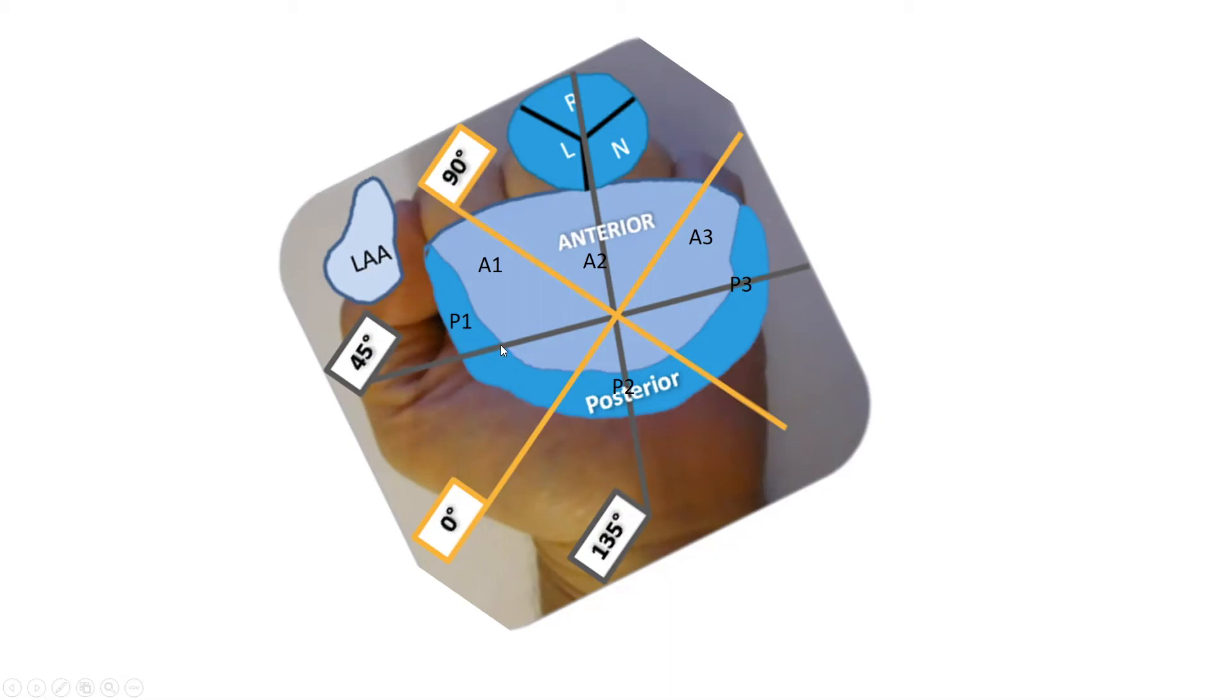Then we lose this part of the posterior leaflet, because as we said, the posterior leaflet is crescent-shaped. And the part of this anterior leaflet comes to view, and this would be A2, followed by the final cut at P3.